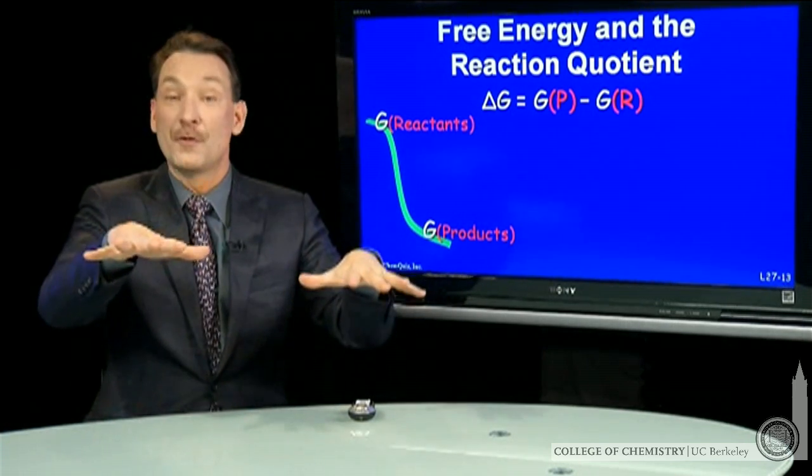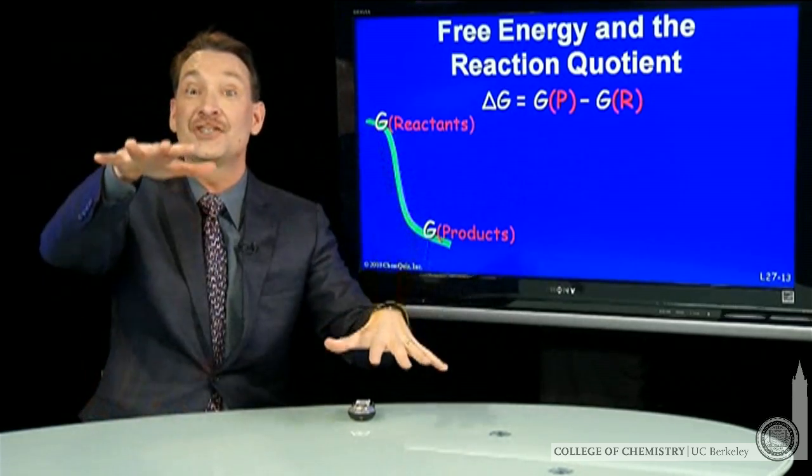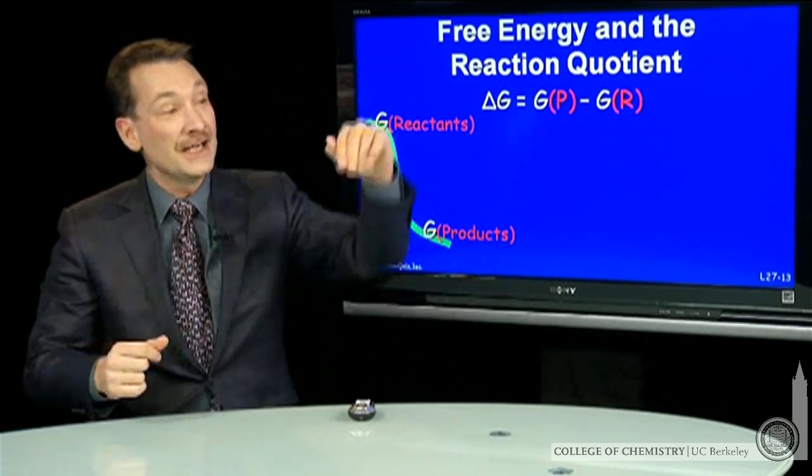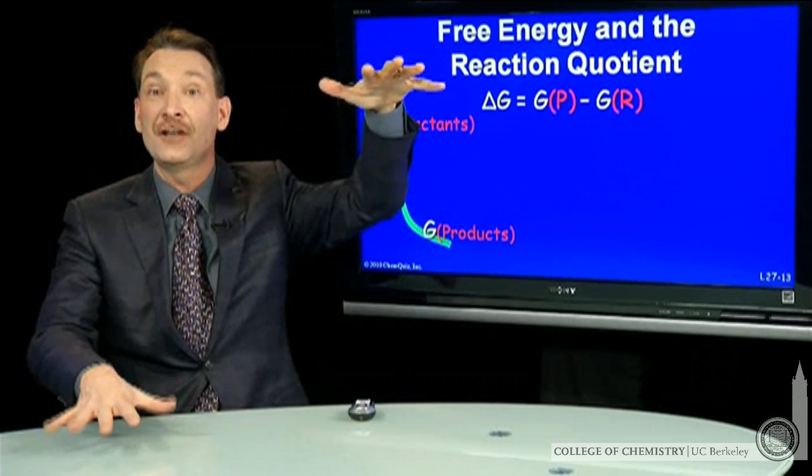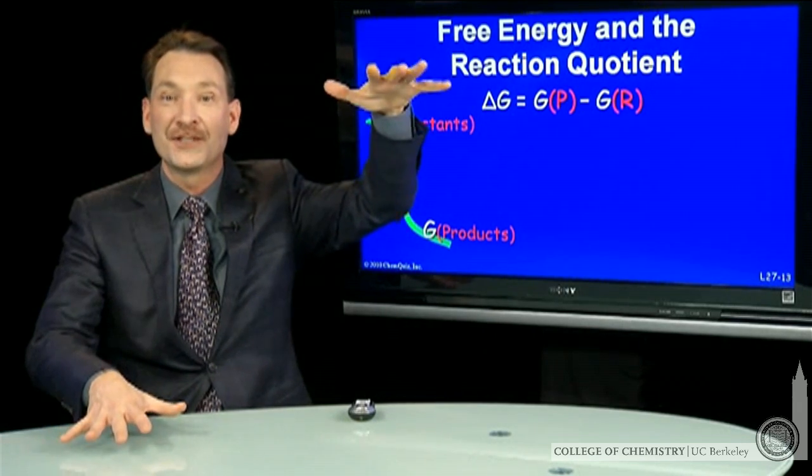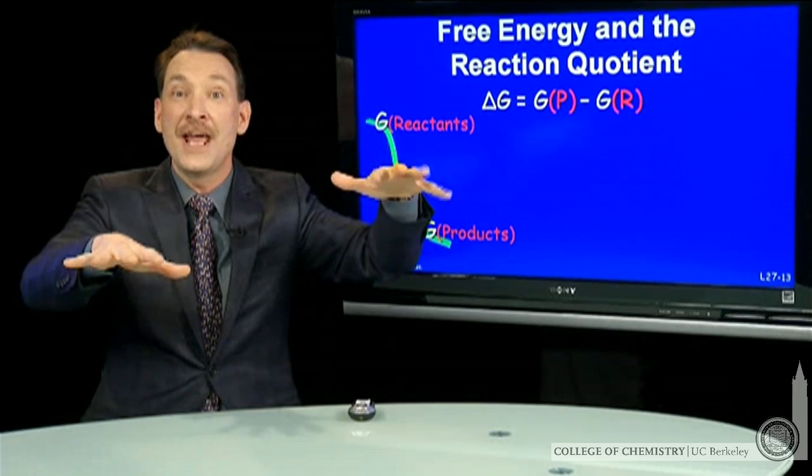So as reactions proceed, the free energies of the products and reactants change. At the beginning, the reactant free energies will be high and the product free energy is low. As the reaction proceeds, the reactant free energies drop and the product free energies raise.